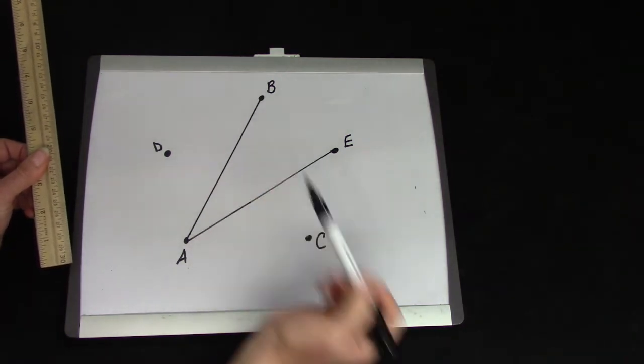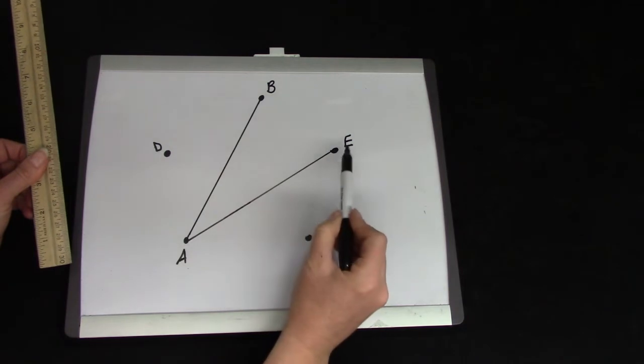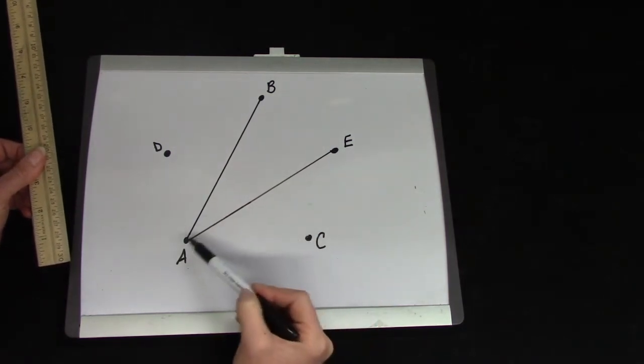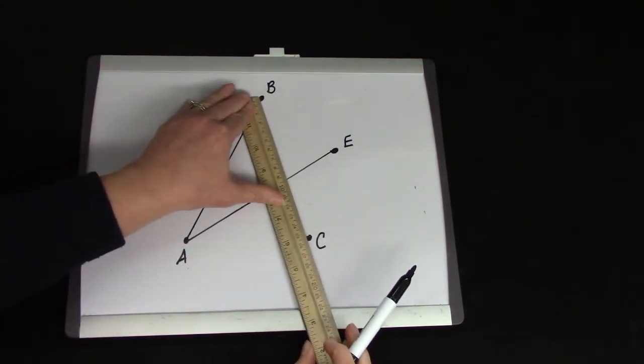So we've gone from A to B and now which letter should we go to next? D, E or C? You're right. The alphabet goes A, B, C. So we're going to draw a line from B to C.